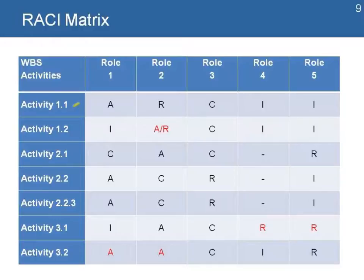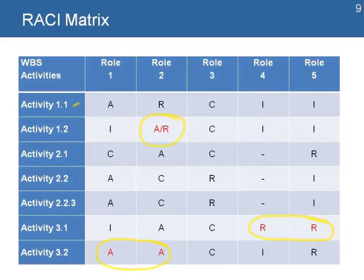Make sure to avoid common mistakes, such as one person being assigned both the accountable and responsible roles, two people sharing the accountability role for the same activity, or two people sharing the responsibility role. This matrix is also helpful for the team as it helps them understand and identify the owners for each activity, so people are clear about who is responsible and are able to report on the progress of those activities to the project manager.